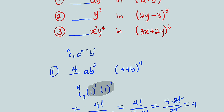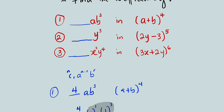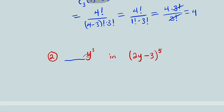Now let's take question number 2. We want to find the coefficient of y to the third power in the expansion of (2y − 3) to the fifth power. To find this coefficient, first let us determine r. You can clearly see that n is equal to 5.